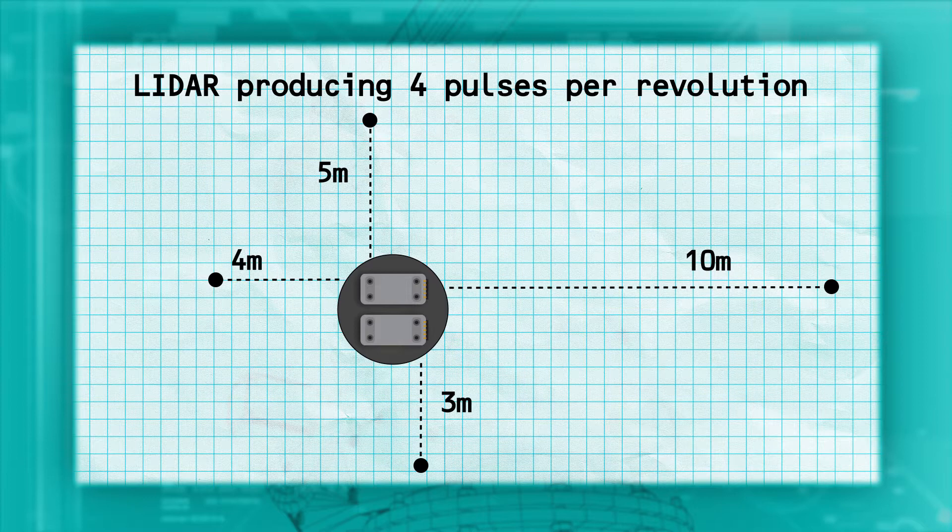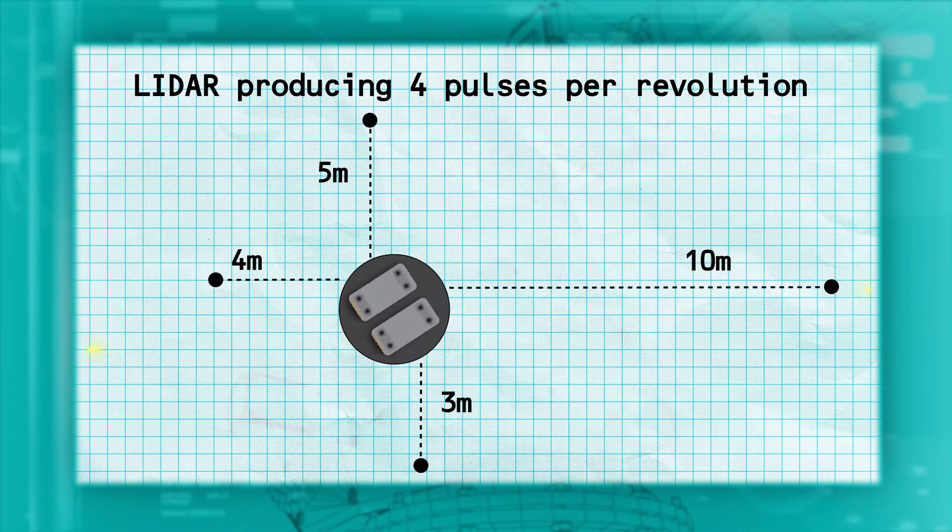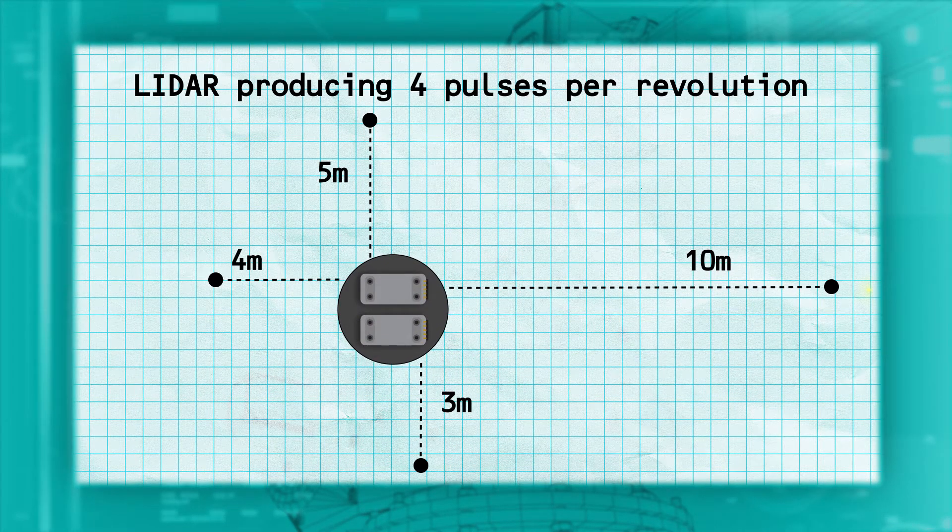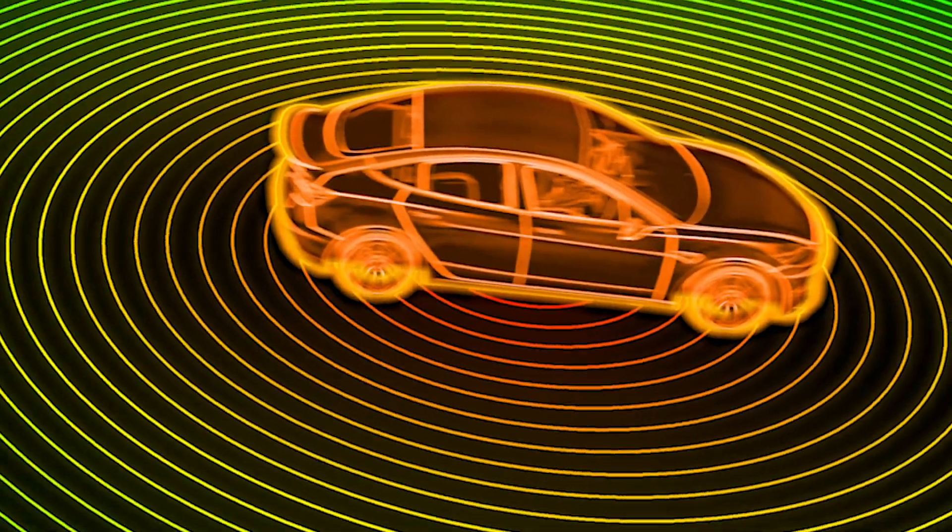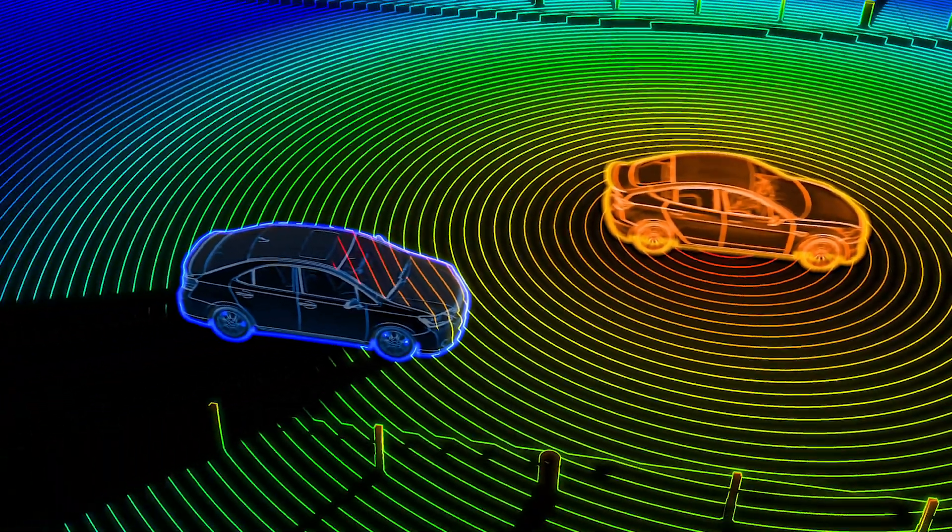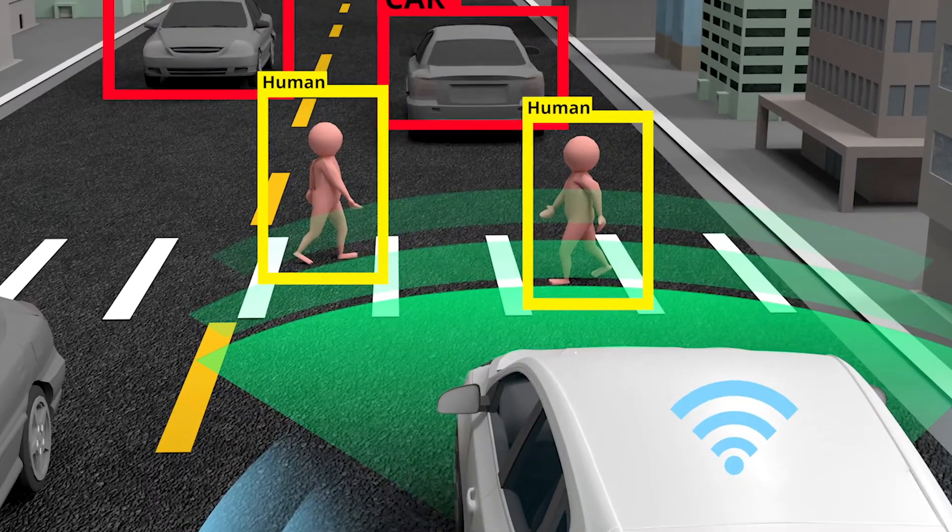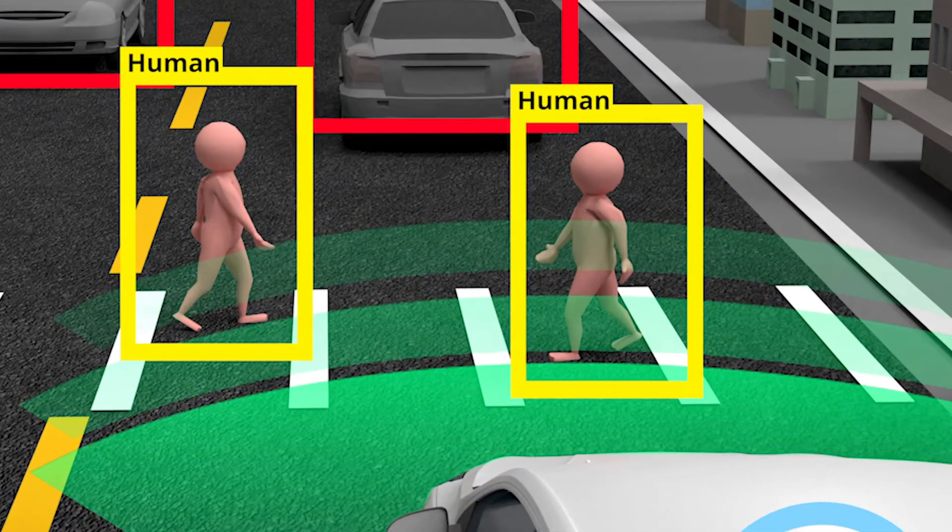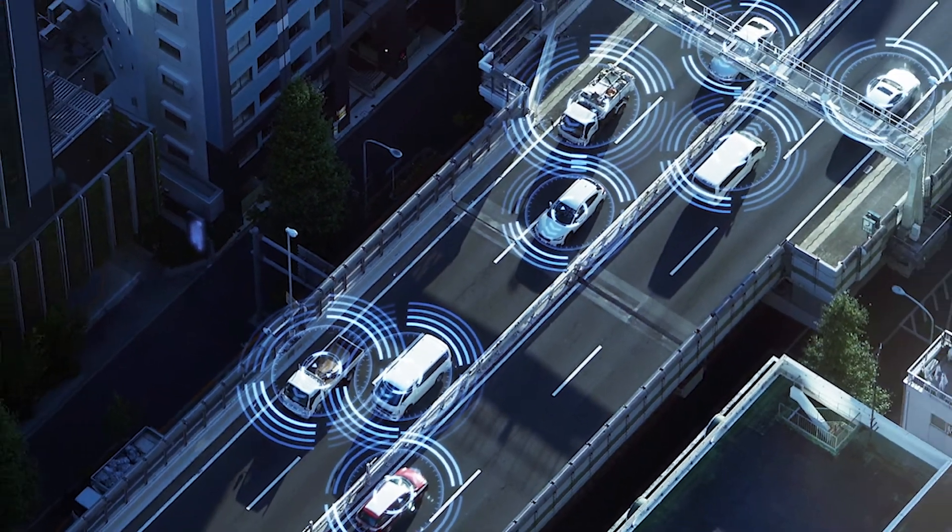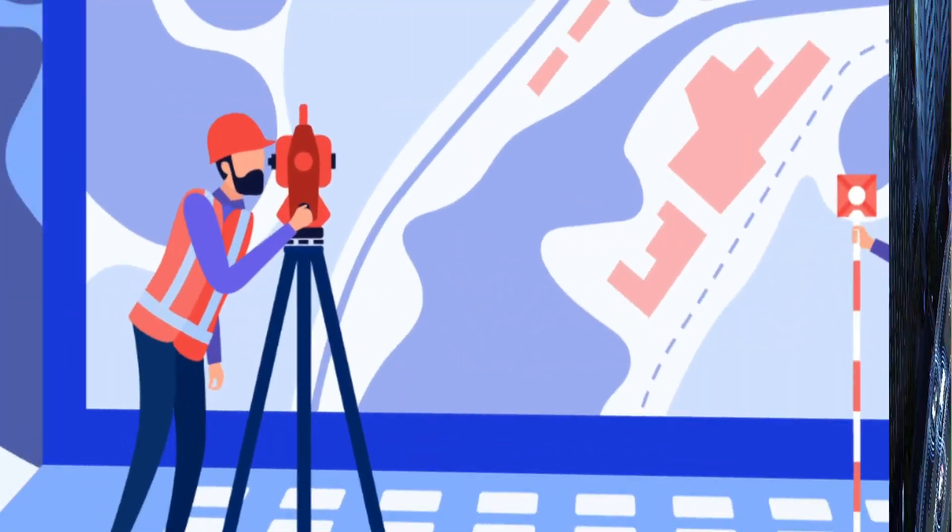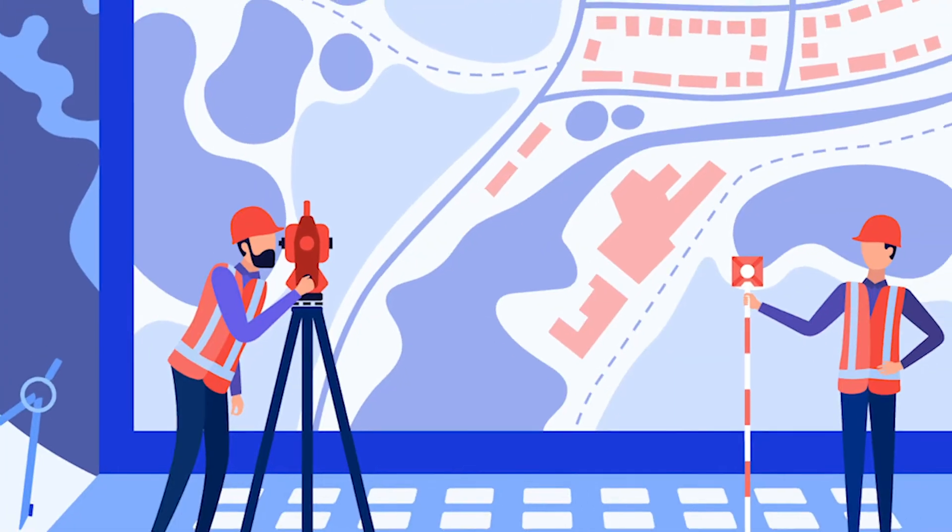However, most scanning LIDARs have many more than 4 pulses per revolution. A common low-cost LIDAR has more than 1,000 pulses per revolution. This results in a high resolution, which can allow scanning LIDARs to map the surfaces of complex objects and perform highly accurate surveys of such things as houses and other buildings.